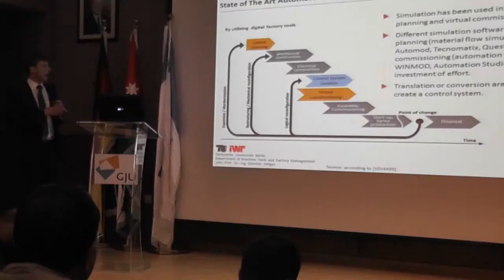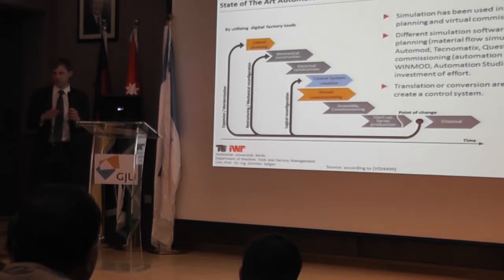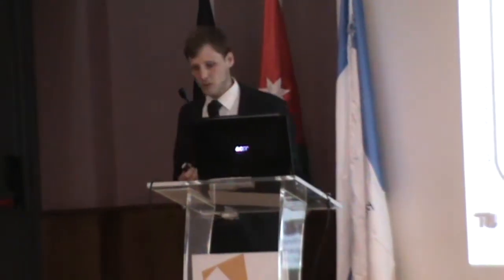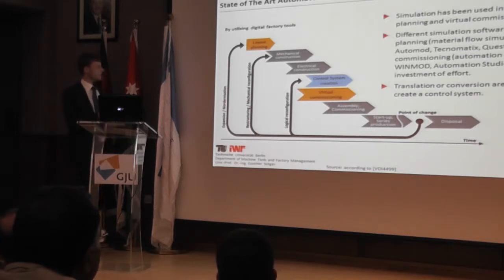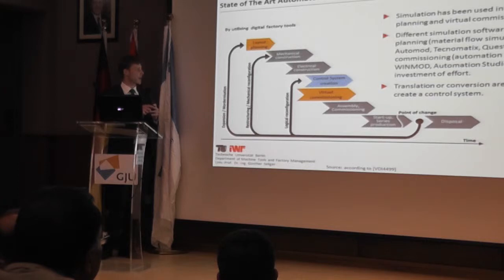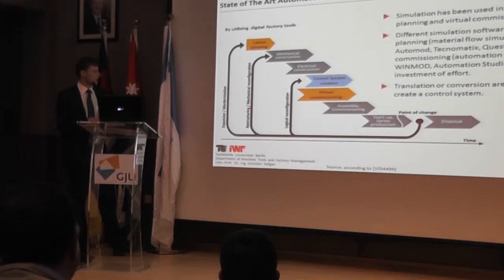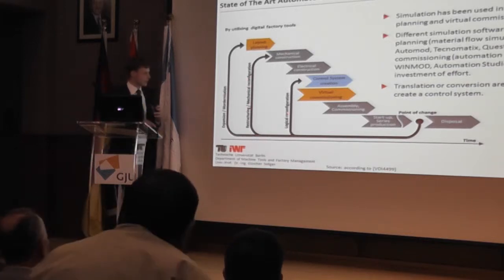Going deeper into changeability — after start-up of series production, a point of change can occur. For example, the customer wants to increase market share by producing more cars. Then you have to go back and expand or modernize the factory, performing layout planning again, reconstructing mechanical construction, and of course adapting the control system. The areas I want to focus on are layout planning, control system creation, and virtual commissioning, because they will later be packed into one concept.